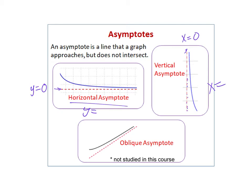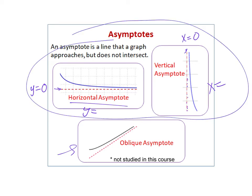Oblique asymptotes we will not discuss in this course. Those are asymptotes that end up being diagonal, as you can see on the bottom. We'll talk about the top two. A common error would be to think that a horizontal asymptote, because the x-axis is a horizontal axis, would be x equals. But a horizontal asymptote means the y is constant, and a vertical asymptote means the x is constant.